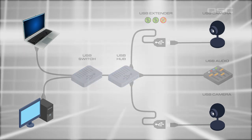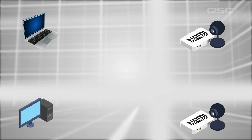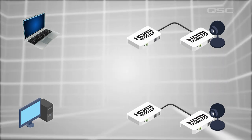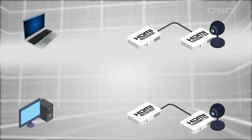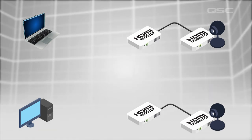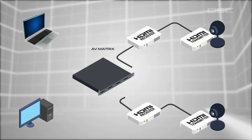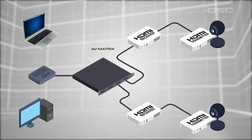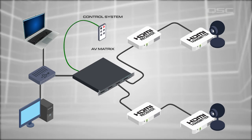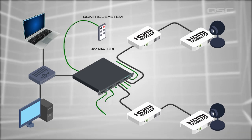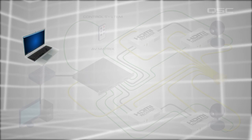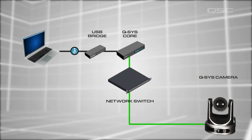Another alternative is to use HDMI cameras, which bring their own pain points. HDMI is also impossible to field terminate, and the room now requires an HDMI video matrix, which will require a control system of its own. Not to mention that you're running HDMI, and control, and power. All of this can be made much easier.